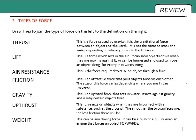So, let us run through these. I might have picked a bit of a funny order to do these in. And the first force that I've done the definition for is upthrust. It's an upward force that acts in water. It acts against gravity. And it's why certain objects float. Next up is friction. This force acts on objects when they're in contact with a substance, such as the ground. The smoother the two surfaces are, the less friction there will be.